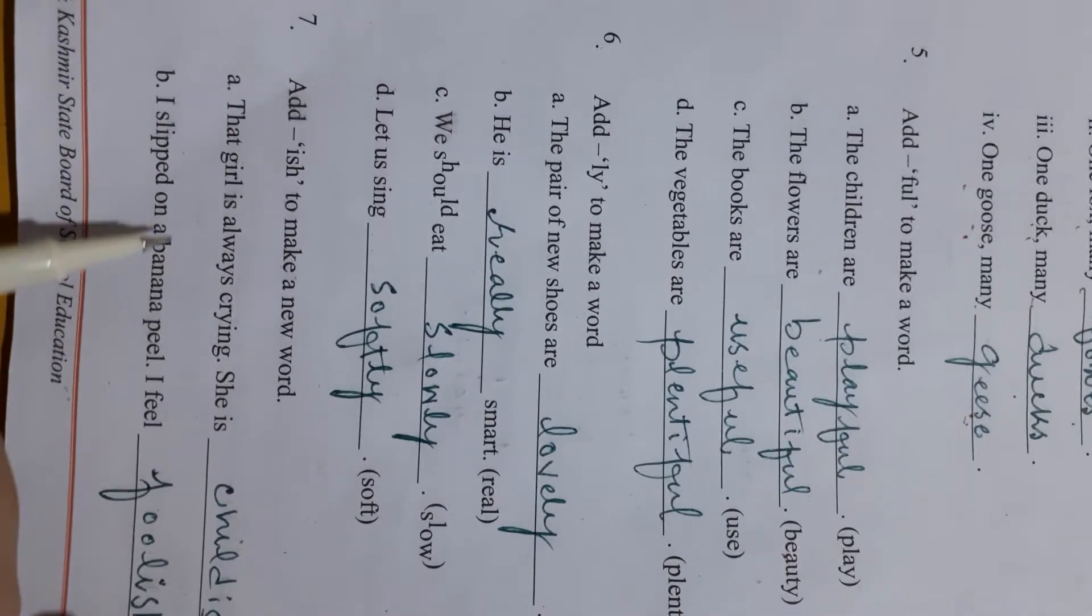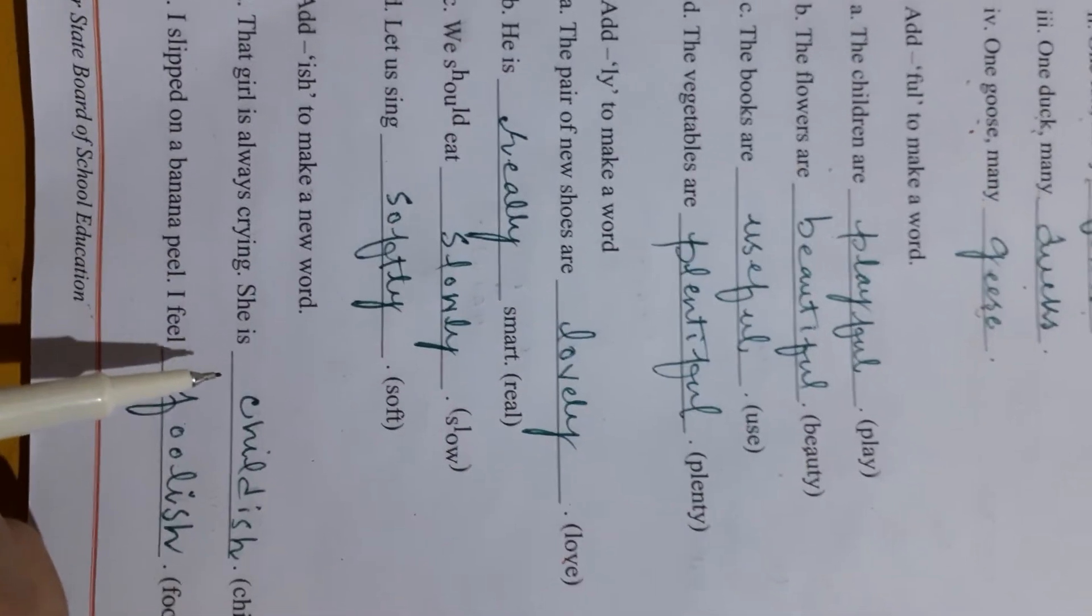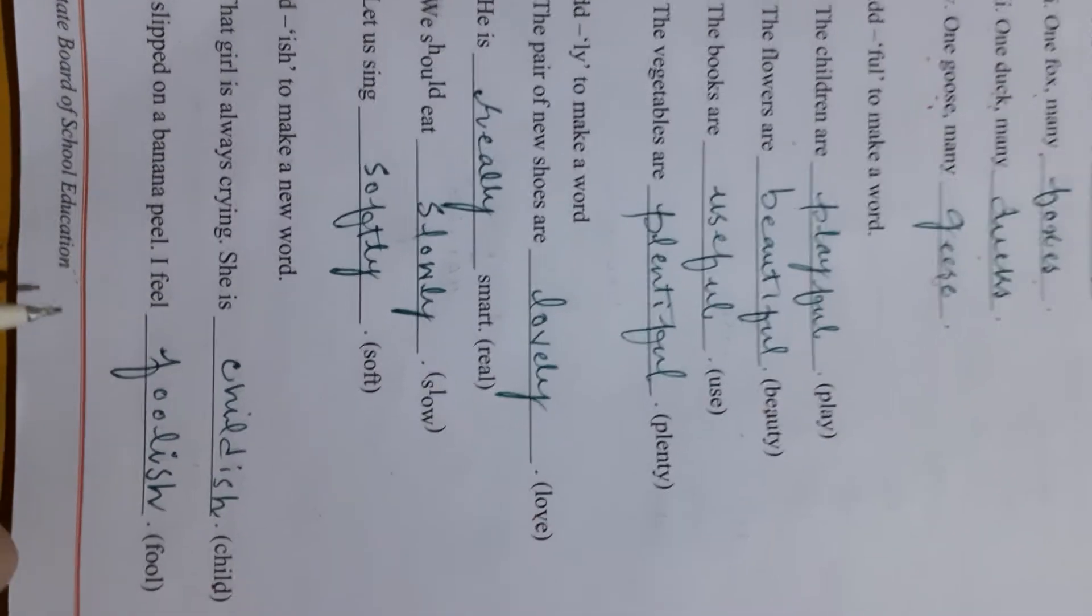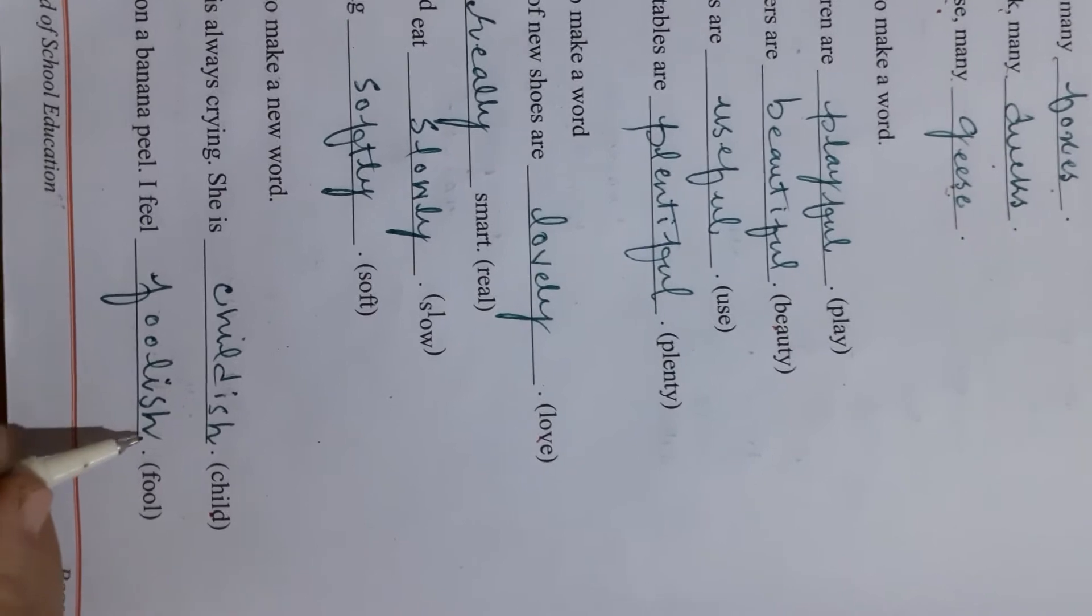Add ish to make a new word. That girl is always crying. She is childish. I slipped on a banana peel. I feel foolish.